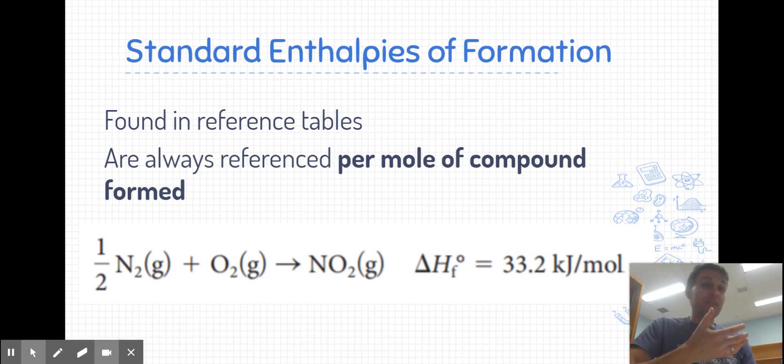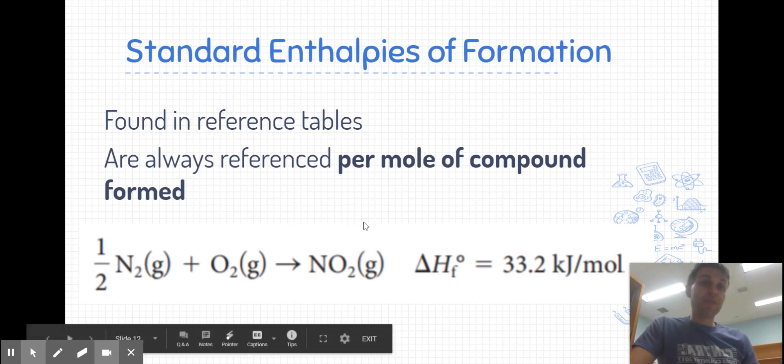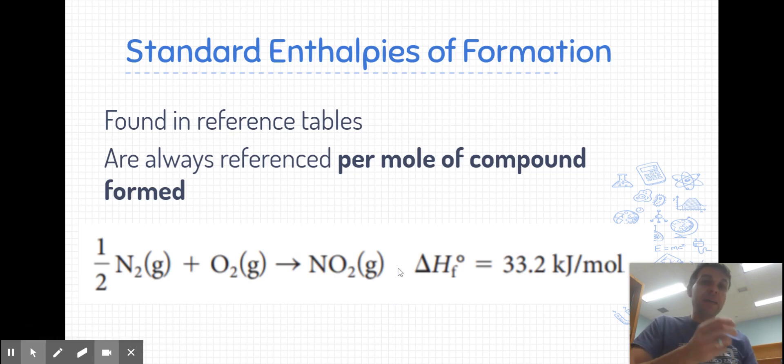But we have to write those in their standard states. So nitrogen, in its most stable form, is found as N2 gas. Same with oxygen, O2 gas. We balance the equation by writing coefficients so it's referenced per mole of the product. So you'll often see fractional coefficients in these equations so that the product is always set for one mole.